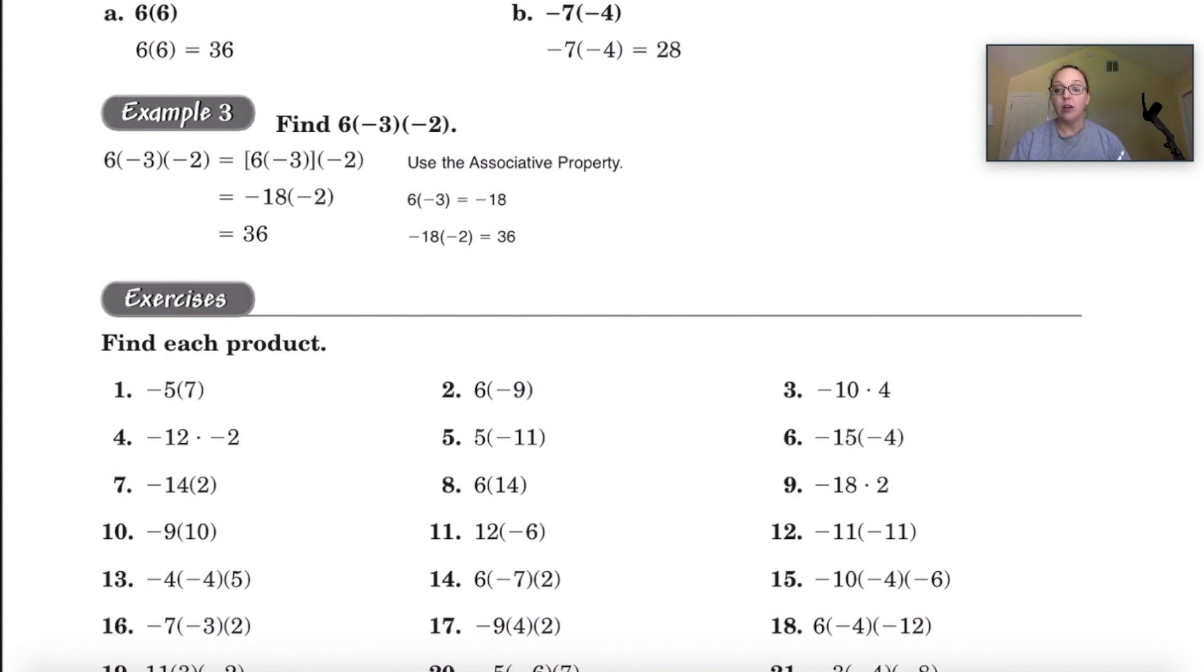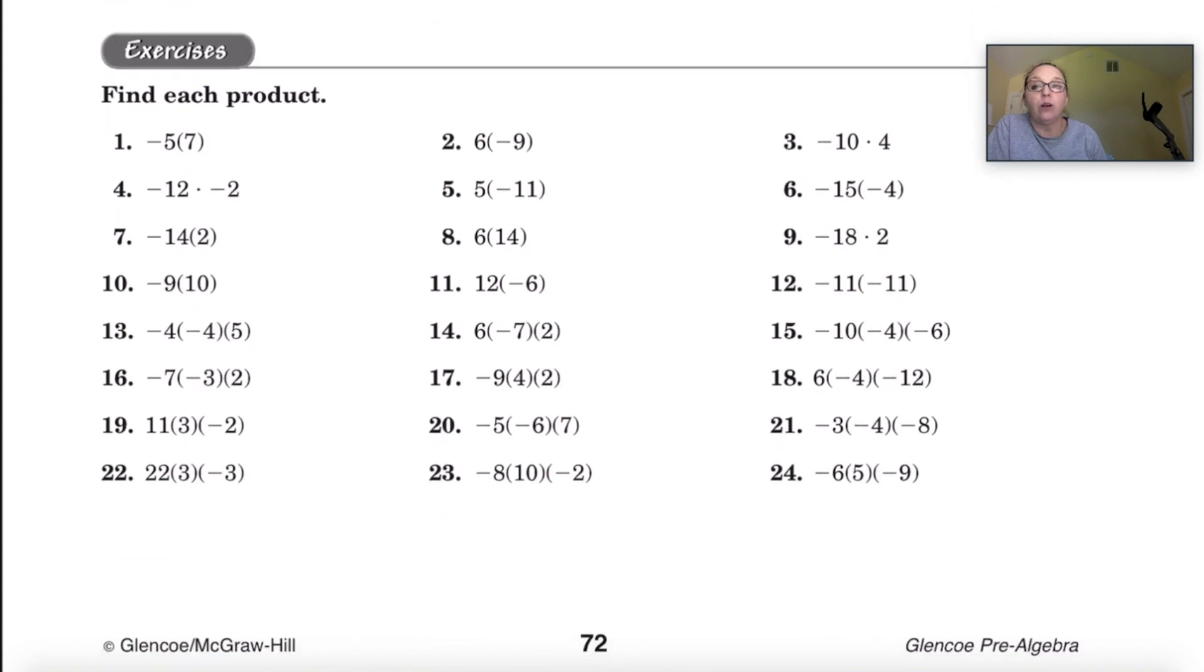Now we're ready to go down to the exercises. Let's look at number 1. That says negative 5 times 7. We do 5 times 7 which is 35. Since they have different signs we're going to have a negative 35 as our answer there.